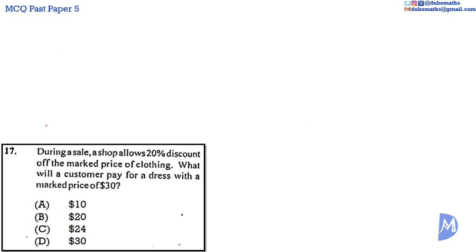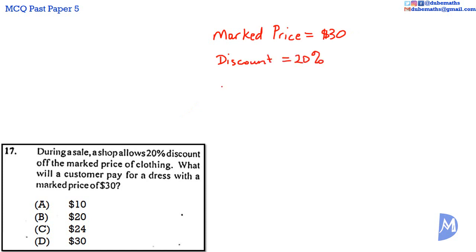Question 17. The marked price is equal to $30. The discount is 20%. So 20% of $30 is equal to 20 over 100, multiplied by 30.